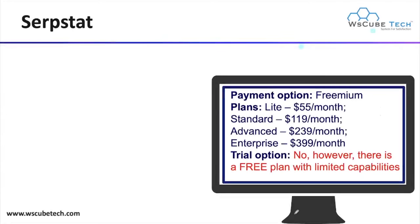The next paid keyword research tool is Searchstat. This is not free and there is no free trial available. There are some limited free capabilities for keyword research, but for all features you need to purchase a plan. The plans are: Light at $55 per month, Standard at $119 per month, Advanced at $239 per month, and Enterprise at $399 per month. You can choose any plan for your organization.